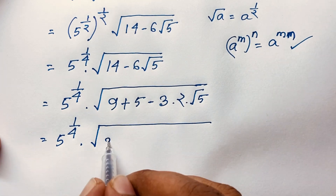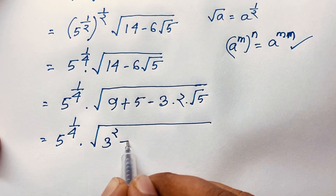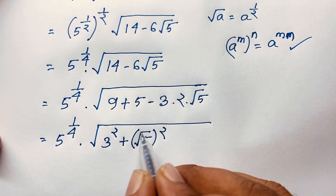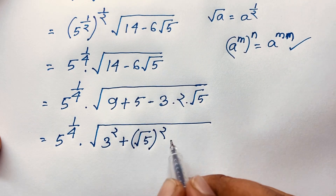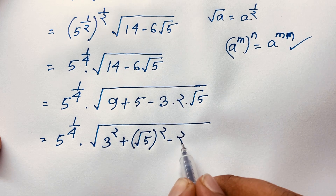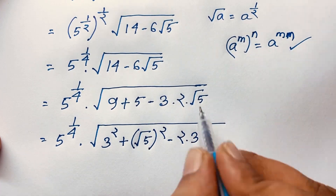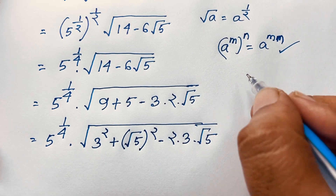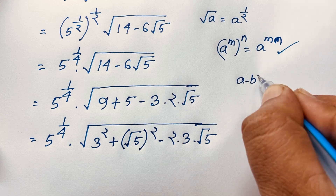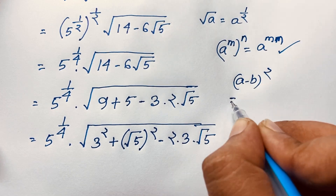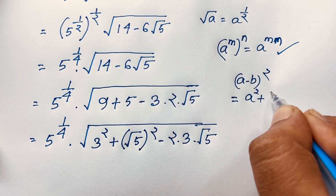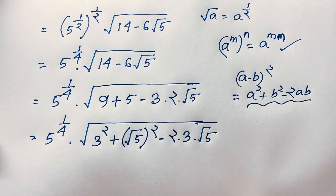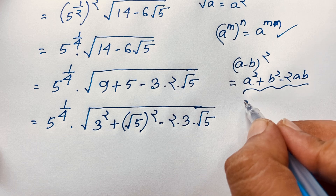Now 9 is 3 squared, and 5 is (√5) squared. So the expression inside the square root becomes 3² + (√5)² minus 2·3·√5. Recognizing a=3 and b=√5, this matches the identity (a minus b)² equals a² + b² minus 2ab.